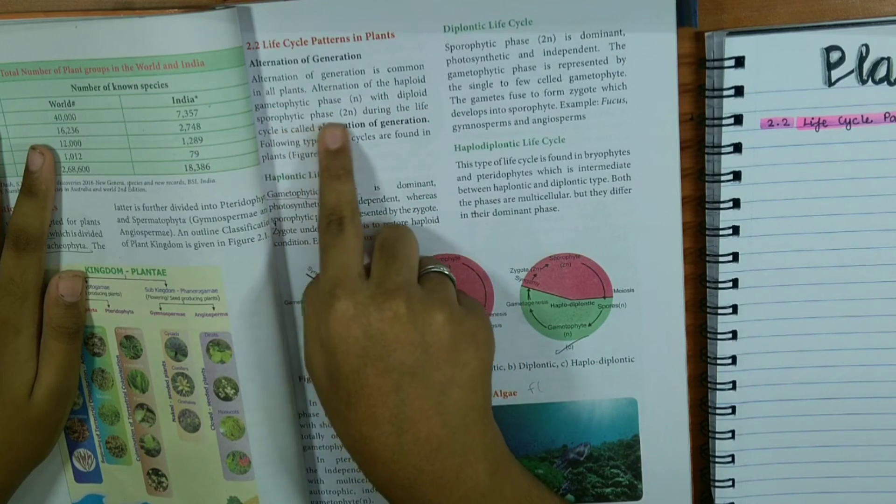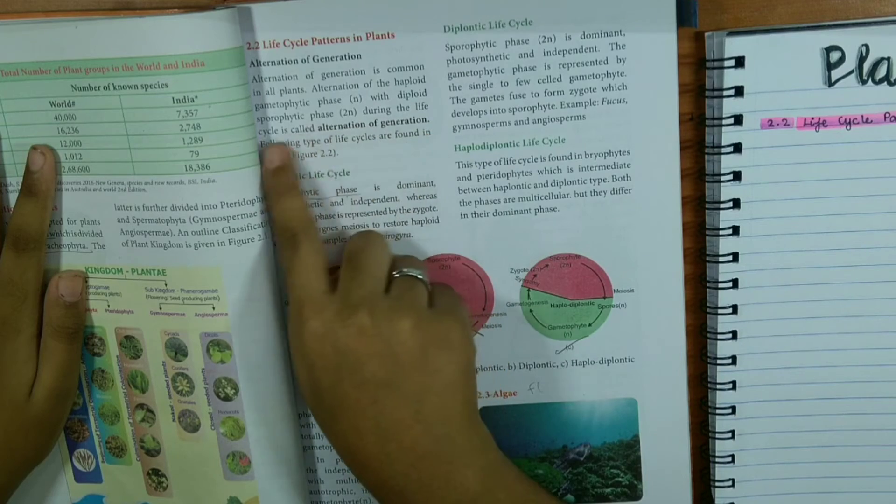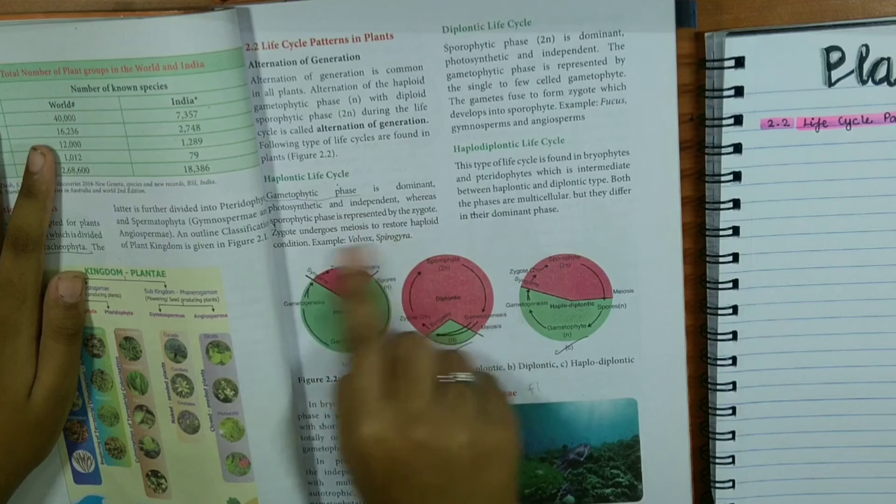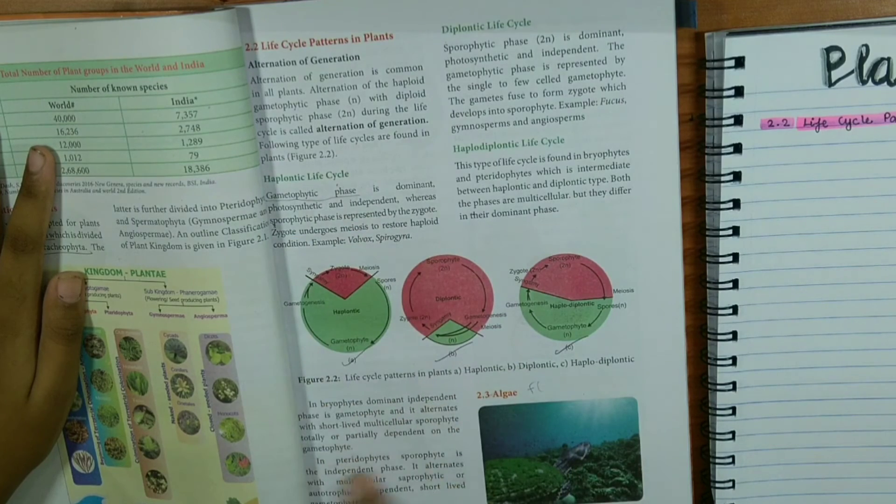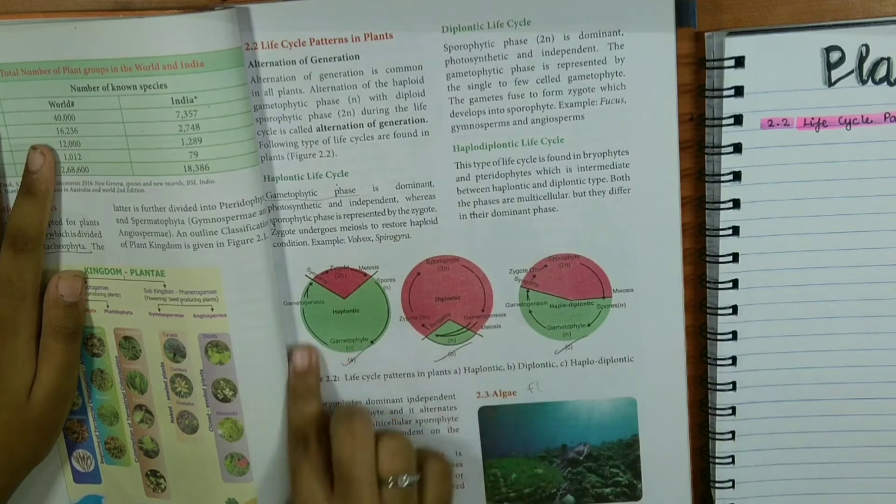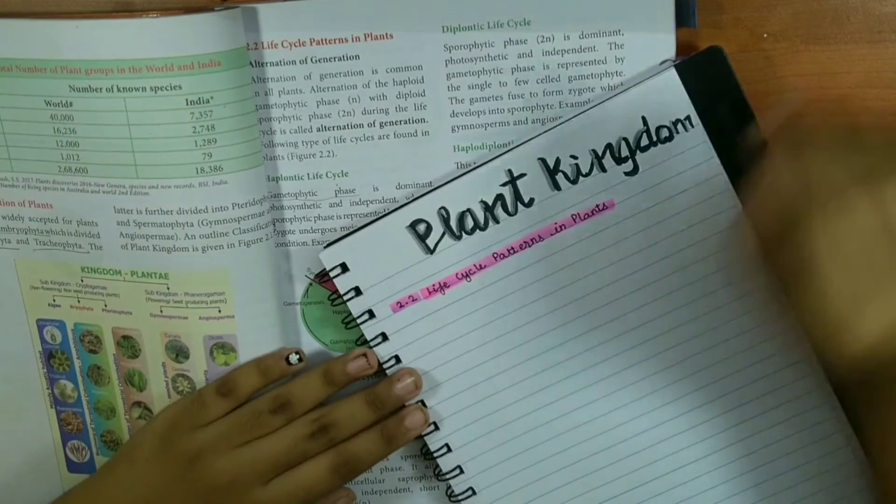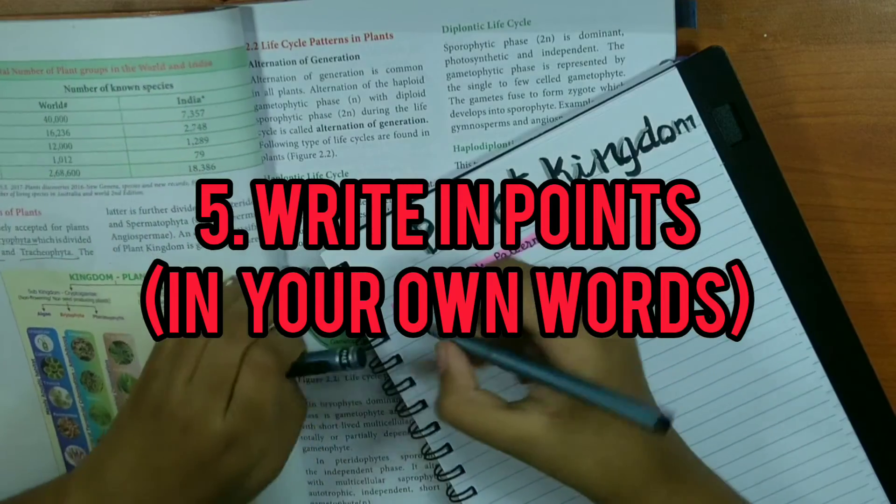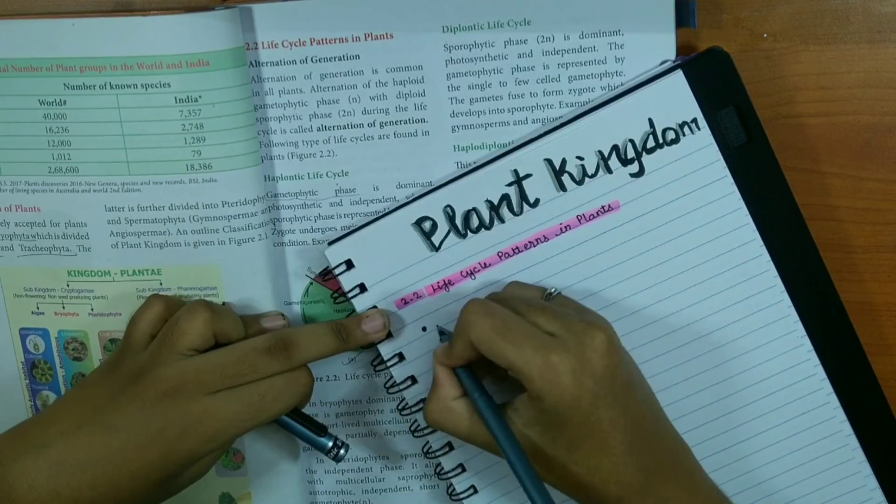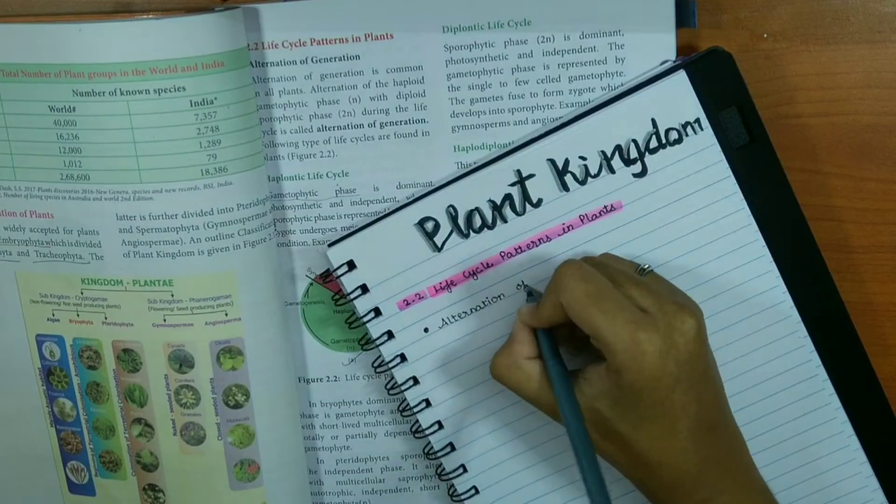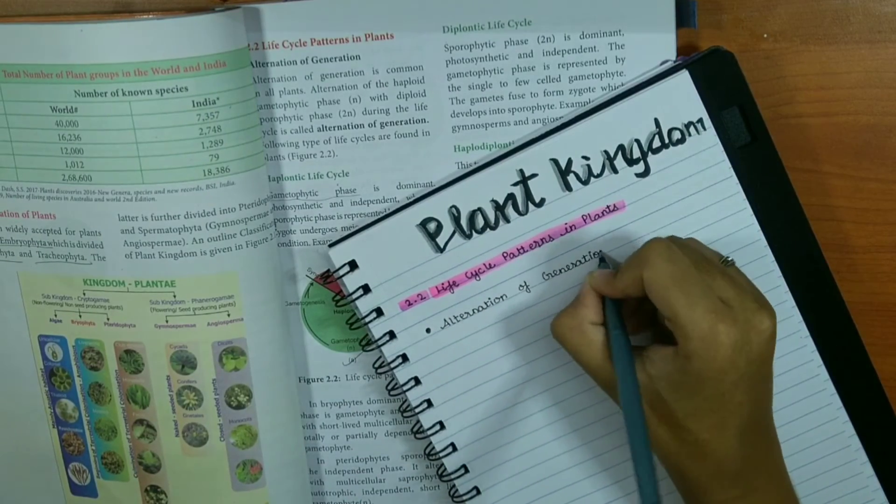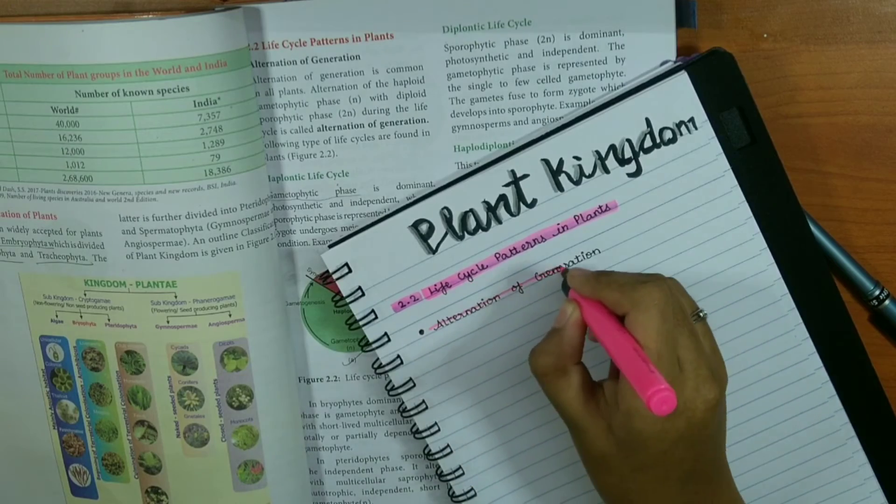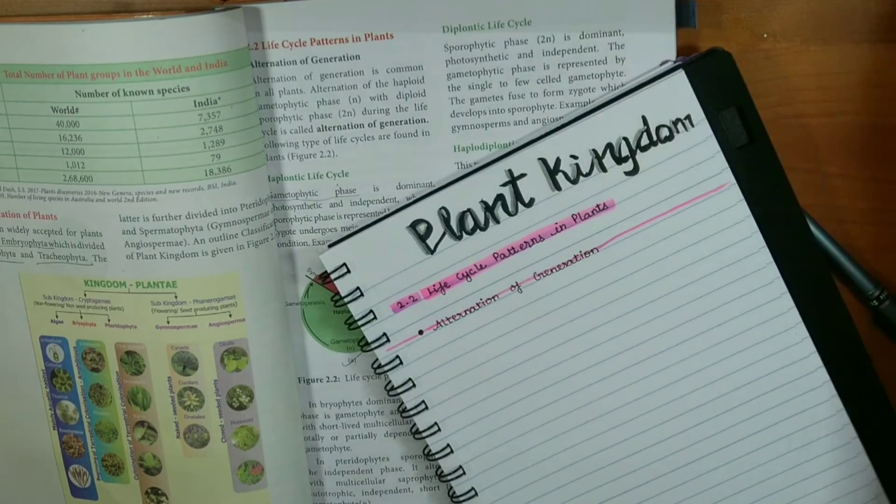Take time to skim through it so that you get an idea of what to mark as important and what are the key points. After that, you're going to write in points, and the important thing is you're going to write in your own words. If you're just going to copy the paragraphs from your textbook, it's of no use.